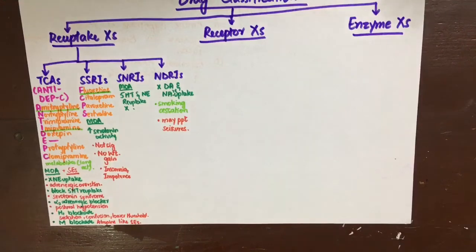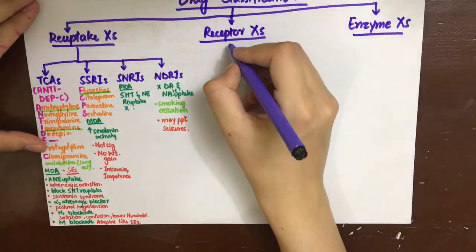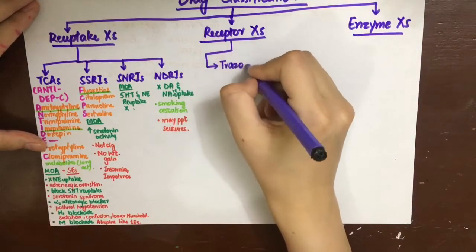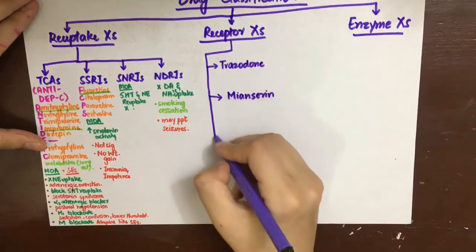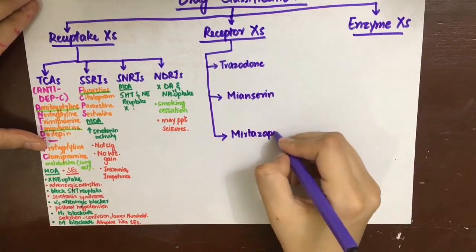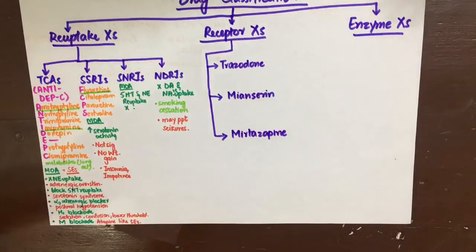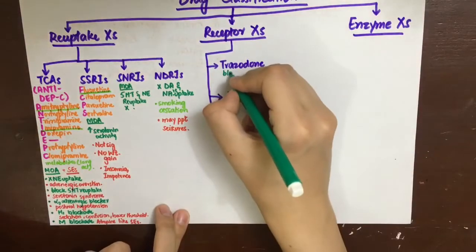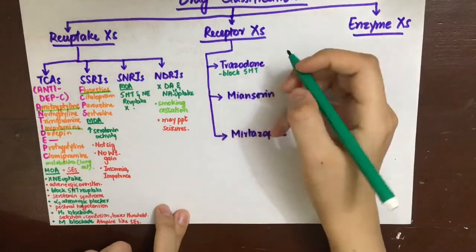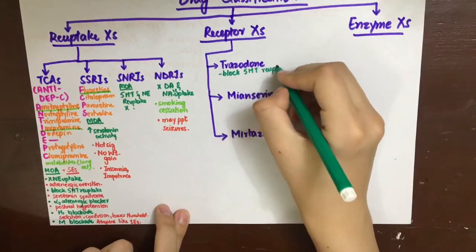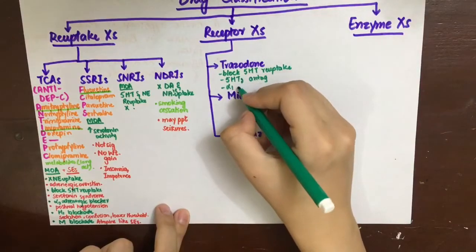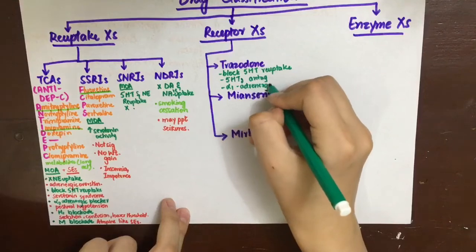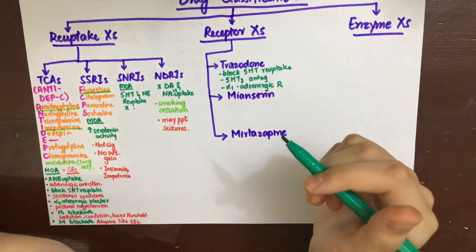Coming to the class of antidepressants that actually increase the release of neurotransmitters by blocking the autoreceptors. They include trazodone, meansirin, and mitazapine. Trazodone acts mainly by blocking 5-HT2 receptors that are autoreceptors for serotonin release and thus increase serotonin release. They also block 5-HT reuptake and also they have alpha-1 adrenergic receptor blockade activity. So due to this blockade, it will cause hypotension and priapism.